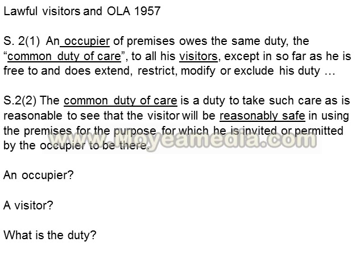We need to know who the occupier is, who the visitor is, and more about the extent of that duty. The Act gives an indication of what is meant by 'premises' in Section 1(3)(a): premises include not just land and buildings, but also movable structures such as a vessel, a vehicle, or an aircraft. So if you came to university by train, the train carriage constitutes premises for the purposes of the Act.